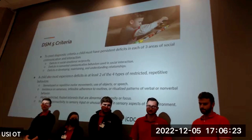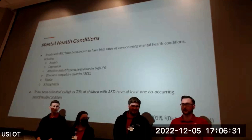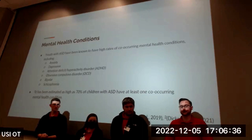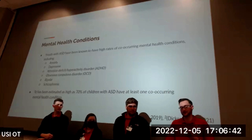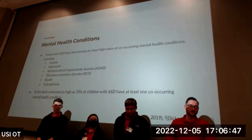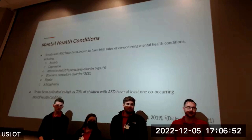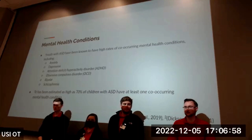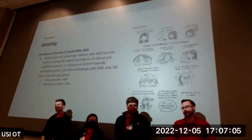The first area of focus is mental health. Youth with ASD have been known to have high rates of co-occurring mental health conditions, including anxiety and depression, which are the two most common. Others include ADHD, obsessive compulsive disorder, bipolar disorder, and schizophrenia. It has been estimated that as high as 70% of children with ASD have at least one co-occurring mental health condition.